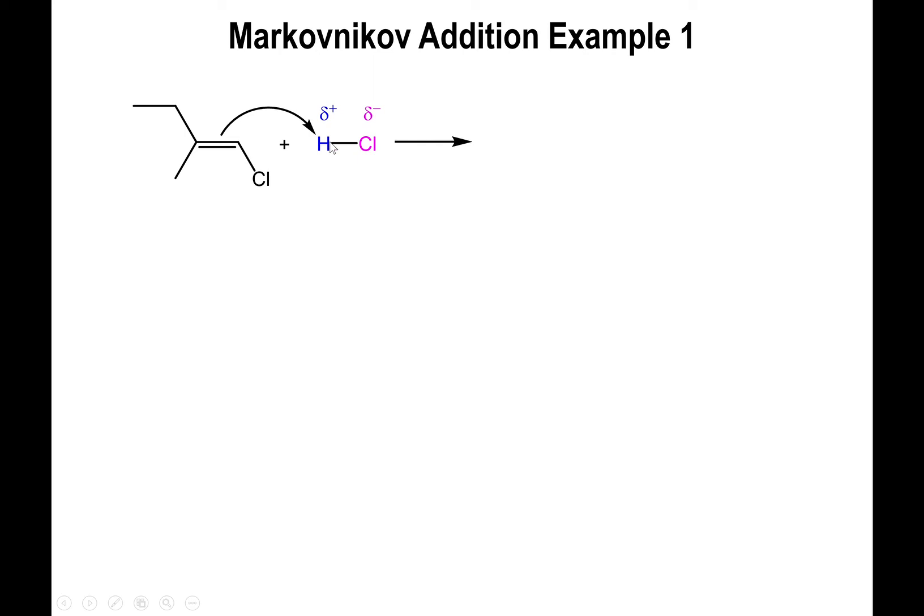The electrons of that HCl bond will go towards the chlorine, making chloride in the process. And notice right here that if the proton ends up being added to the carbon that has the least amount of Hs, so this carbon right here, which has no Hs bound to it, you will produce a carbocation on this particular end, which is technically a primary carbocation. So that's a no-go.